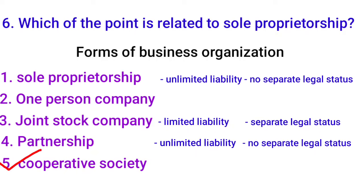Cooperative society is a voluntary organization where people join to meet their cultural, societal, or service needs. Examples include milk federations, fish-related organizations, or agriculture organizations. Amul is a cooperative society. These cooperative societies have a separate legal status and limited liability.